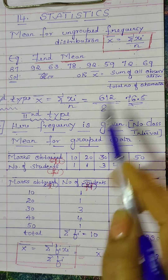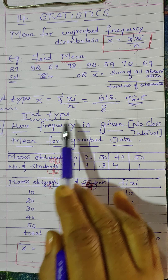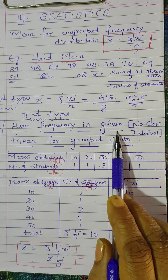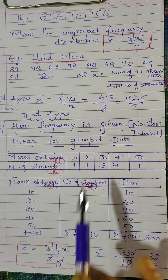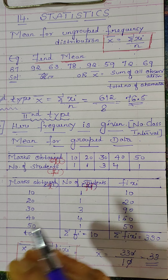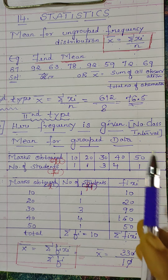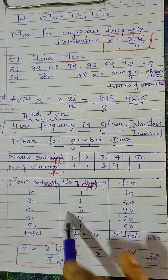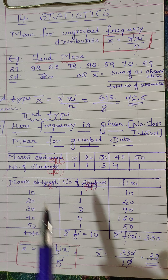This is all revision. Now the second type: here frequency is given and there is no class interval. In 10th standard, along with the class interval you will find the mean. Here in 9th standard you studied only sums like this. The formula is x̄ = Σfᵢxᵢ / Σfᵢ.